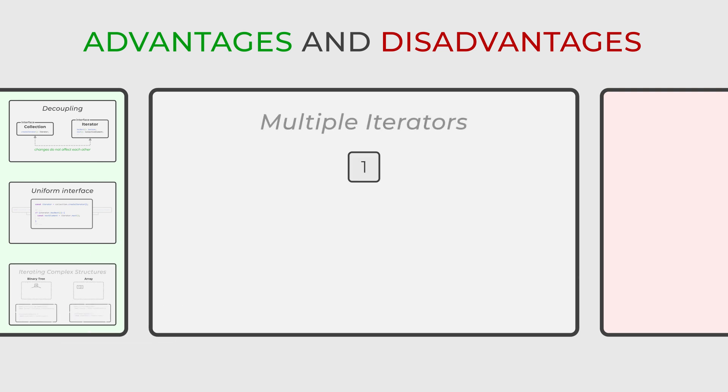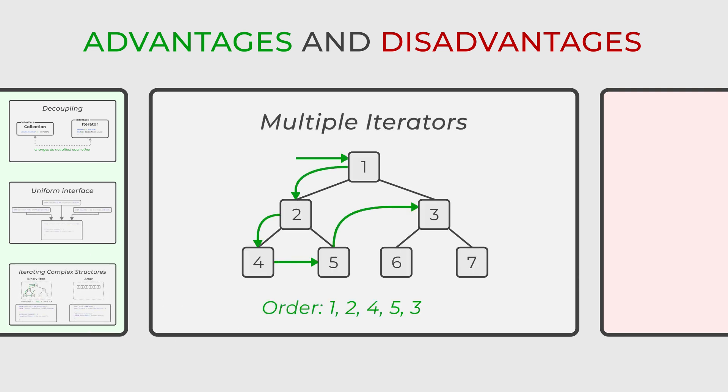Furthermore, the pattern supports the implementation of multiple iterators on the same collection, each providing a unique perspective of traversal. This feature is handy when different views or traversals of the data are required.